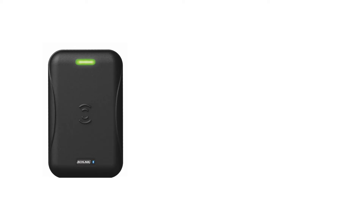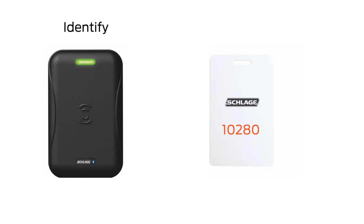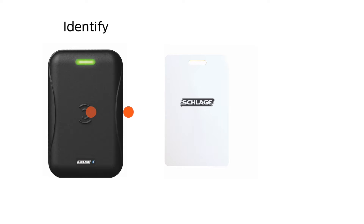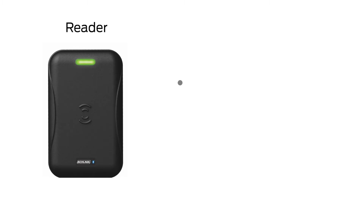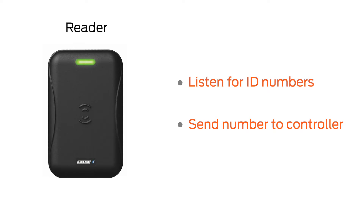Readers are usually a small plastic box mounted to the wall near the door. Systems will commonly use a card reader to gather information about the person. When a person approaches the door, they'll hold their card up to a reader. The card has an ID number electronically stored on it, and when the person holds it up to the reader, the reader provides the card with a little bit of power to transmit the number and receives it. Then the reader sends the ID number to the controller. The reader's jobs are simple: listen for ID numbers when people approach, and send the ID number to the controller.